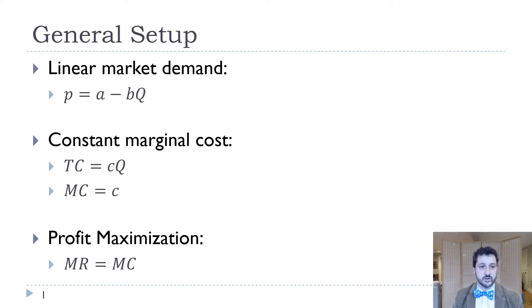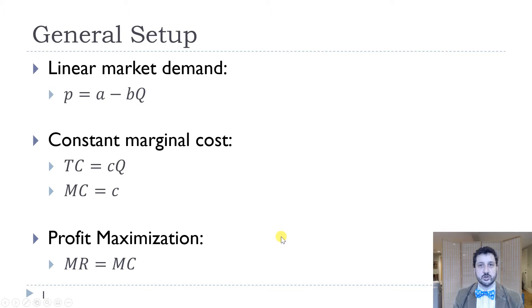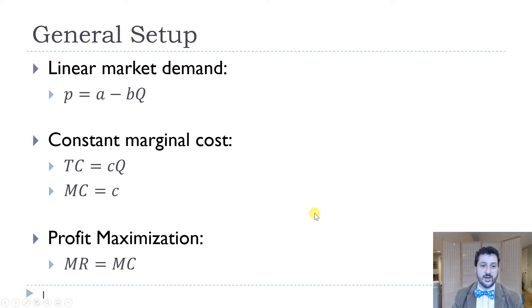We're going to have a constant marginal cost, so our total cost function is just C times Q, and our marginal cost is just C. In profit maximization, what we're going to do is set marginal revenue equal to marginal cost no matter what. It just depends what that marginal revenue and marginal cost looks like depending on the market structure.